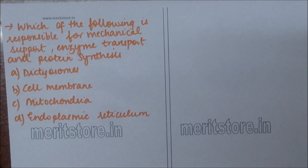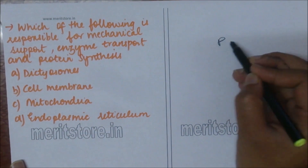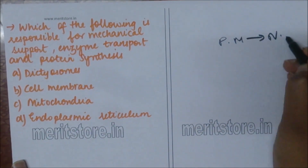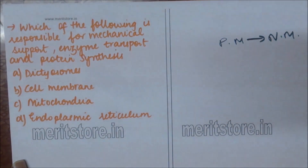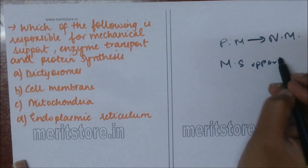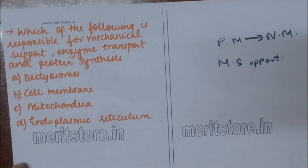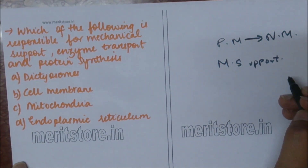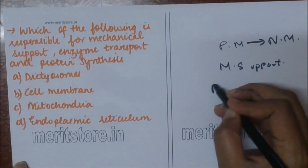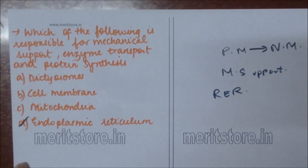The following is responsible for mechanical support, enzyme transmission, and protein synthesis: A) dictyosomes, B) cell membrane, C) mitochondria, D) endoplasmic reticulum. ER is scattered from plasma membrane to nuclear membrane, providing mechanical support. Ribosomes found on the surface of ER participate in protein synthesis, mostly on rough endoplasmic reticulum. They also transfer many enzymes. So option D is the correct answer.